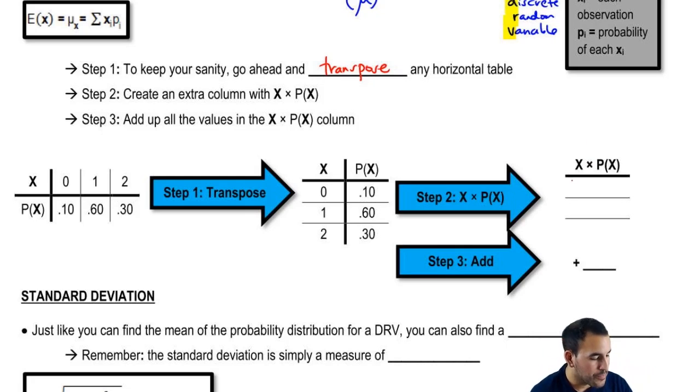The next step is to create an extra column that's X times P(X). I'll just do the first example. X times P(X) is the first X, 0, times its corresponding probability, which is 0.10. 0 times 0.10 is 0. And you would do that for each individual observation. Now, last step is to add up all the X·P(X)'s. So, once we add up every value within this X·P(X) column, we get this guy.